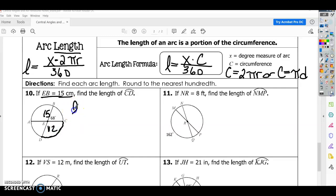And then we're just going to plug it into the formula, L equals 112 times 2 pi r, twice our radius, 2 times 15 is 30 pi, and then divide that by 360.